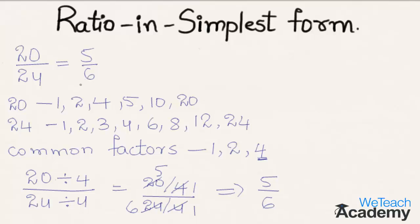To write a ratio in the simplest form, consider the greatest common factor and divide the numerator and denominator by the greatest common factor, and we get the simplest form of the ratio. Hope you understood the concept. Do like and subscribe to WeTeachAcademy.com. Thanks for watching, have a nice day.